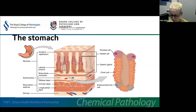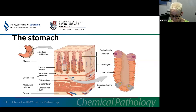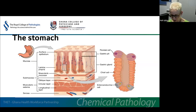The stomach acts as a reservoir for ingested food, where it's mixed with hydrochloric acid, with mucus and pepsin, before being released in a controlled way into the duodenum. The mucosal surface of the stomach is lined by mucus-secreting columnar epithelium, with gastric pits that contain the acid-secreting parietal or oxyntic cells and the pepsinogen-secreting chief cells. The stomach also secretes intrinsic factor, which binds vitamin B12 and aids its absorption in the terminal ileum. Measurement of intrinsic factor antibodies can be helpful in evaluation of pernicious anaemia, where the pathology involves autoimmune destruction of intrinsic factor.